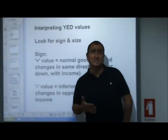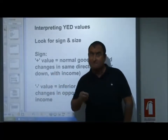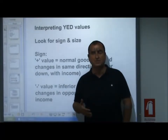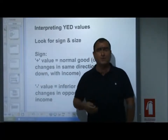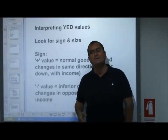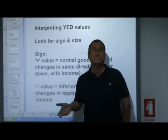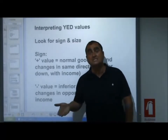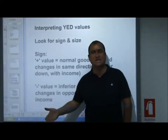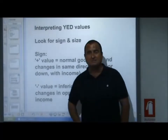Demand changes in the opposite way to income — it is possible that we get more income and buy less of something. That's called an inferior good. Bus tickets are sometimes given as an example: our incomes go up, we buy fewer bus tickets because we can now afford a taxi. Or maybe cheap cuts of meat — another textbook example. If our income goes up, maybe we buy less mincemeat because now we can afford steak.